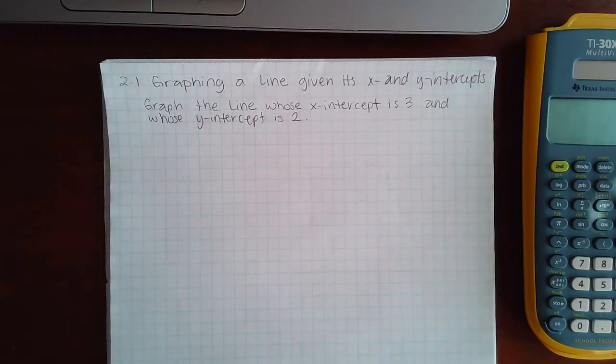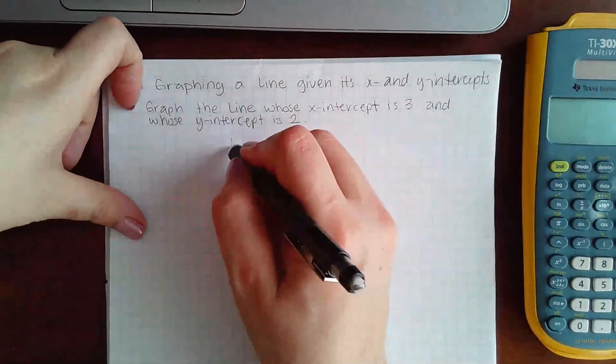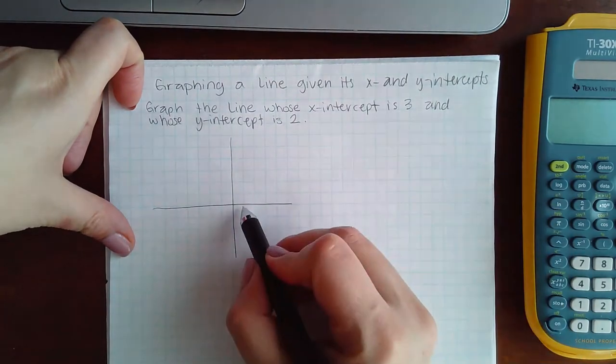Here we have graphing a line given its x and y intercepts. Graph the line whose x intercept is 3 and whose y intercept is 2. So if I'm drawing that in Alex, I will just find the x intercept of 3.